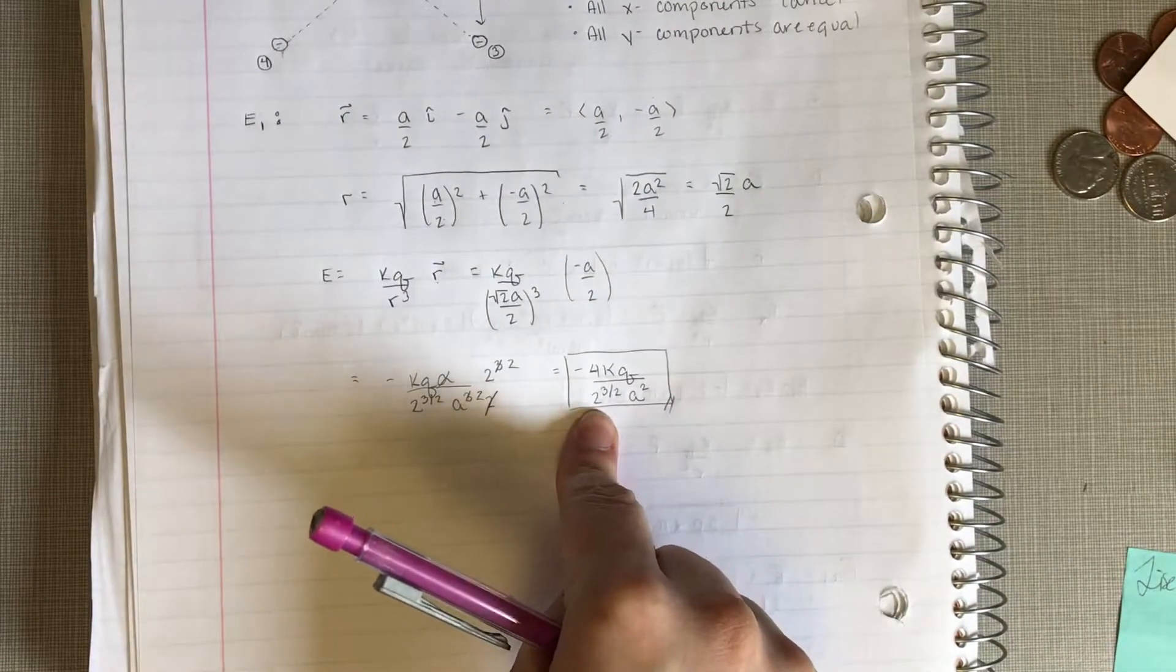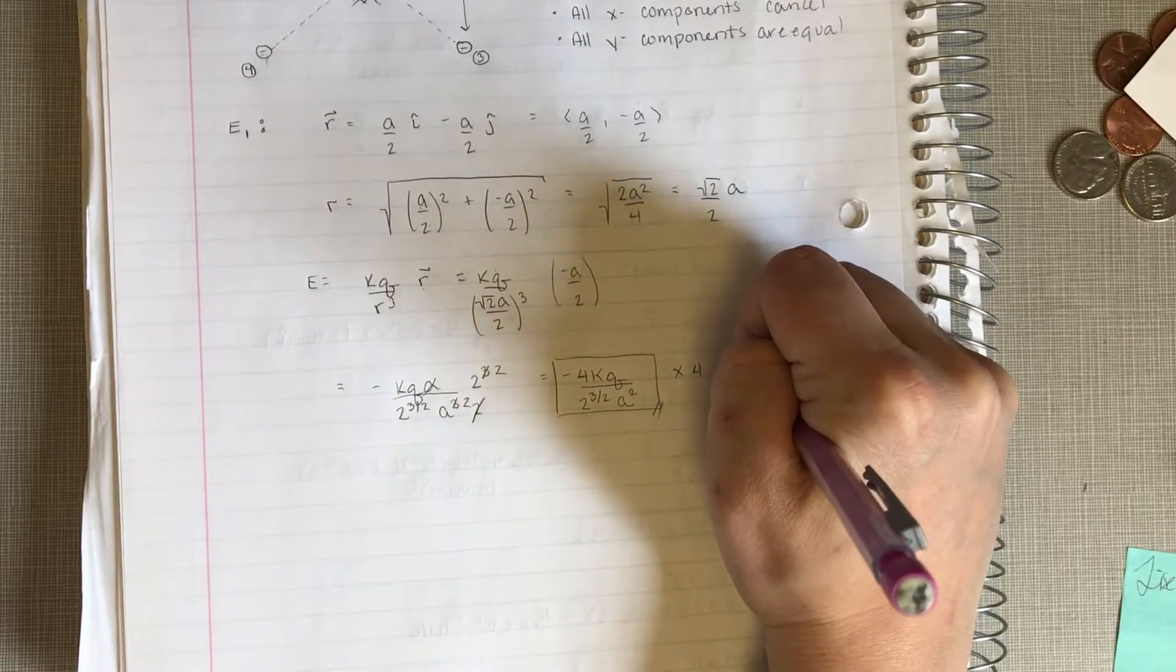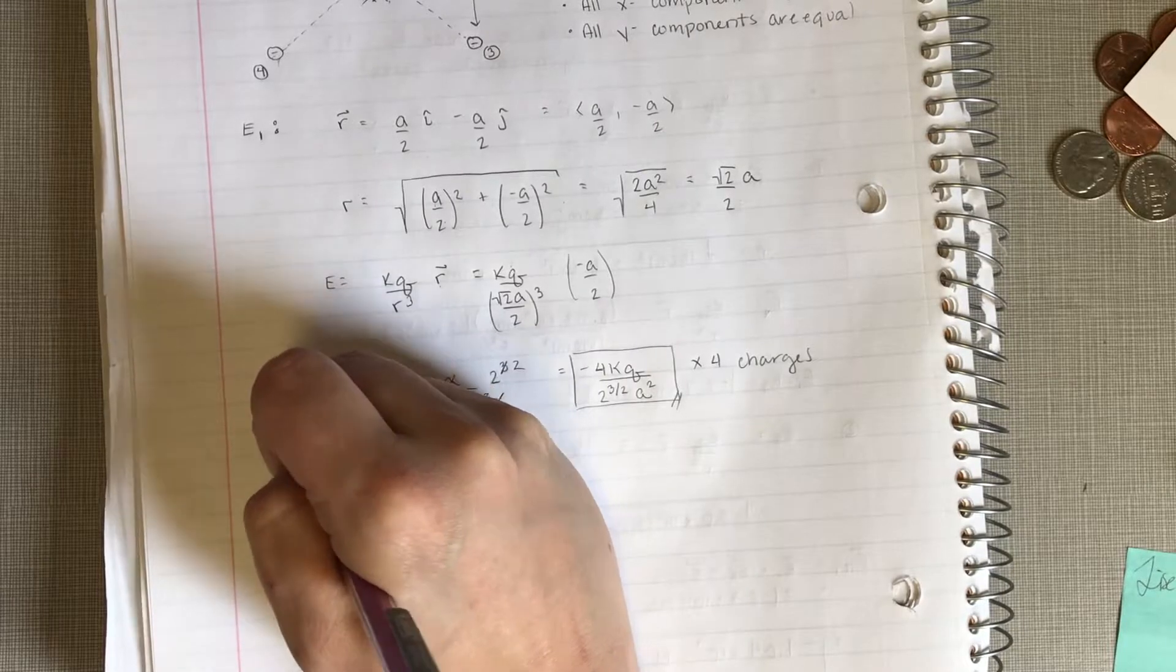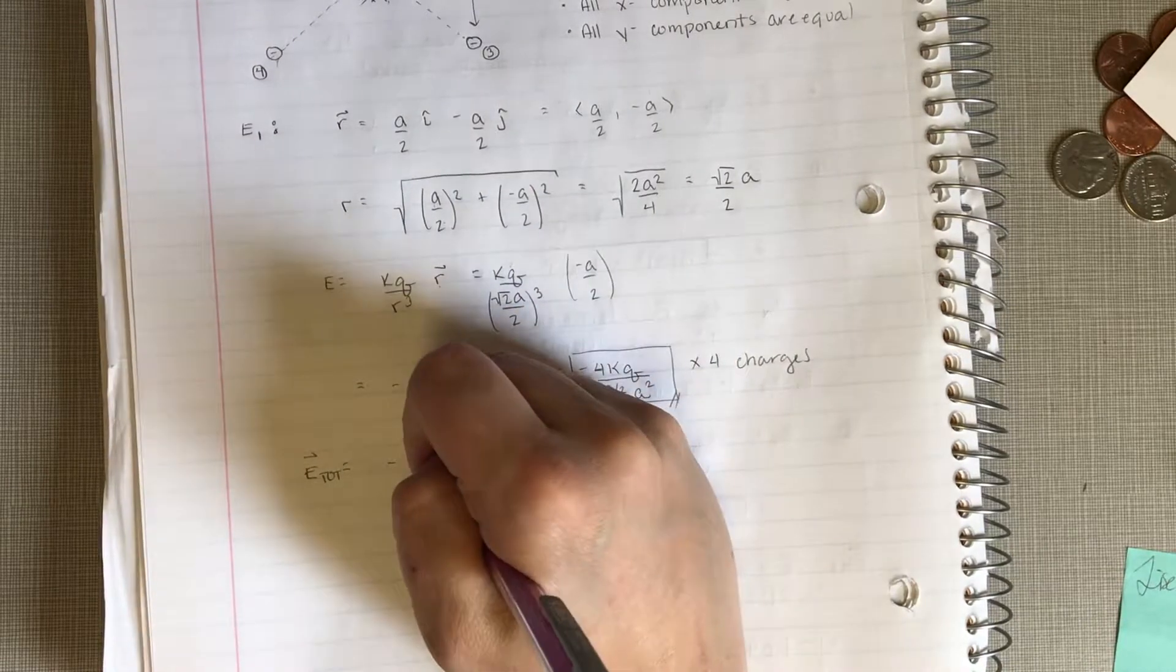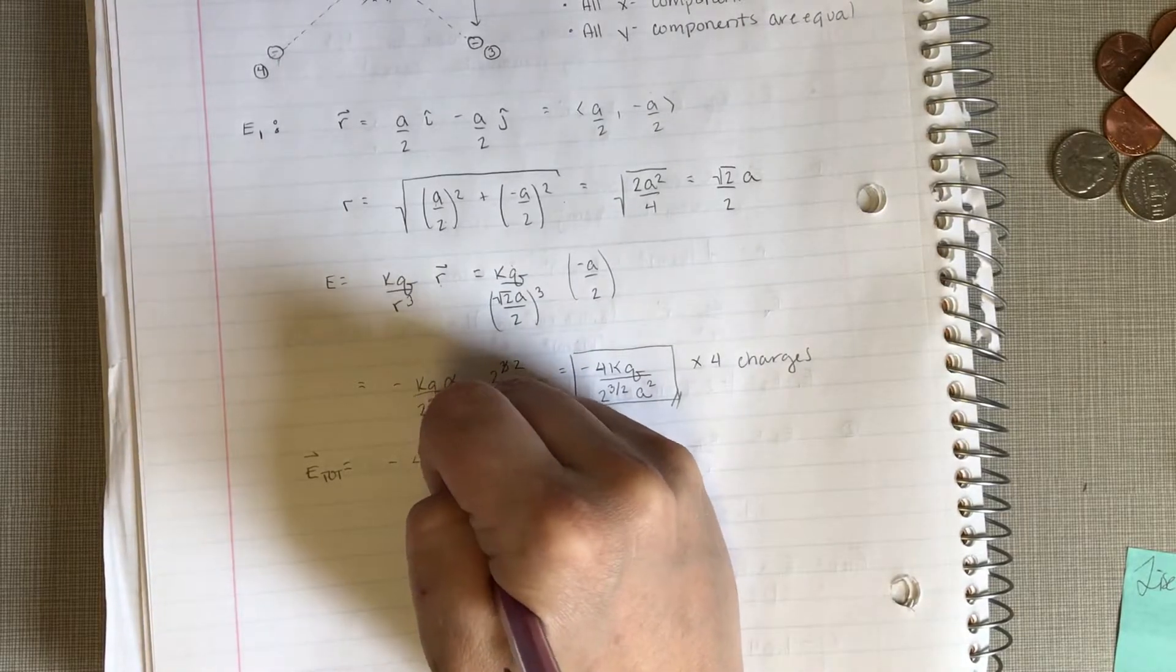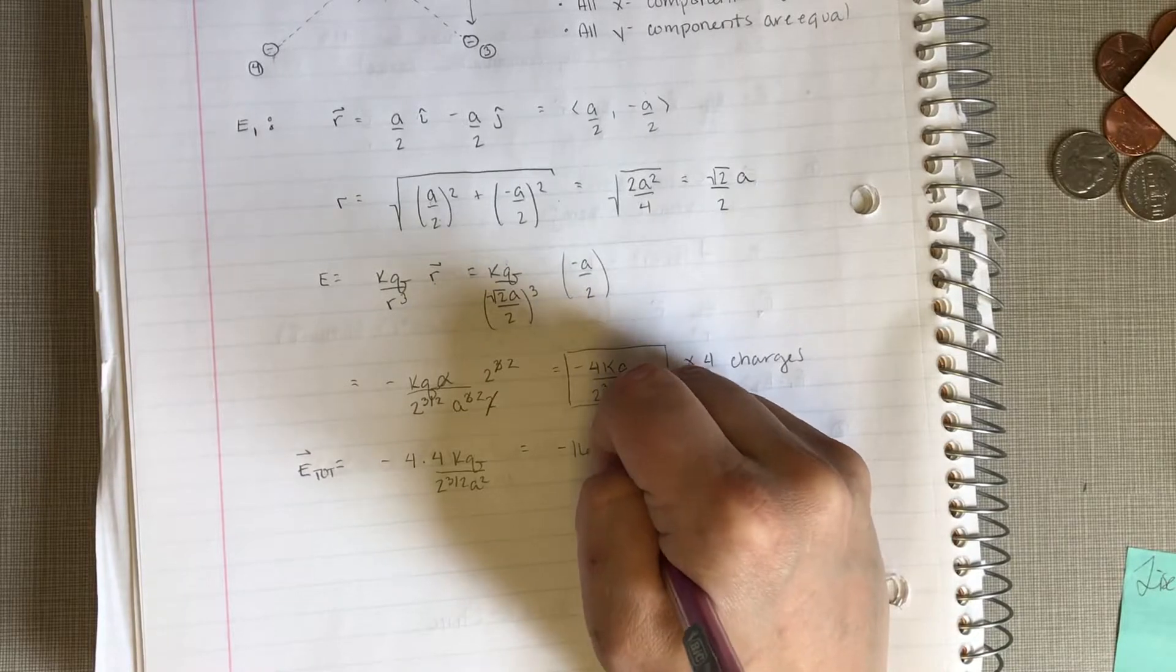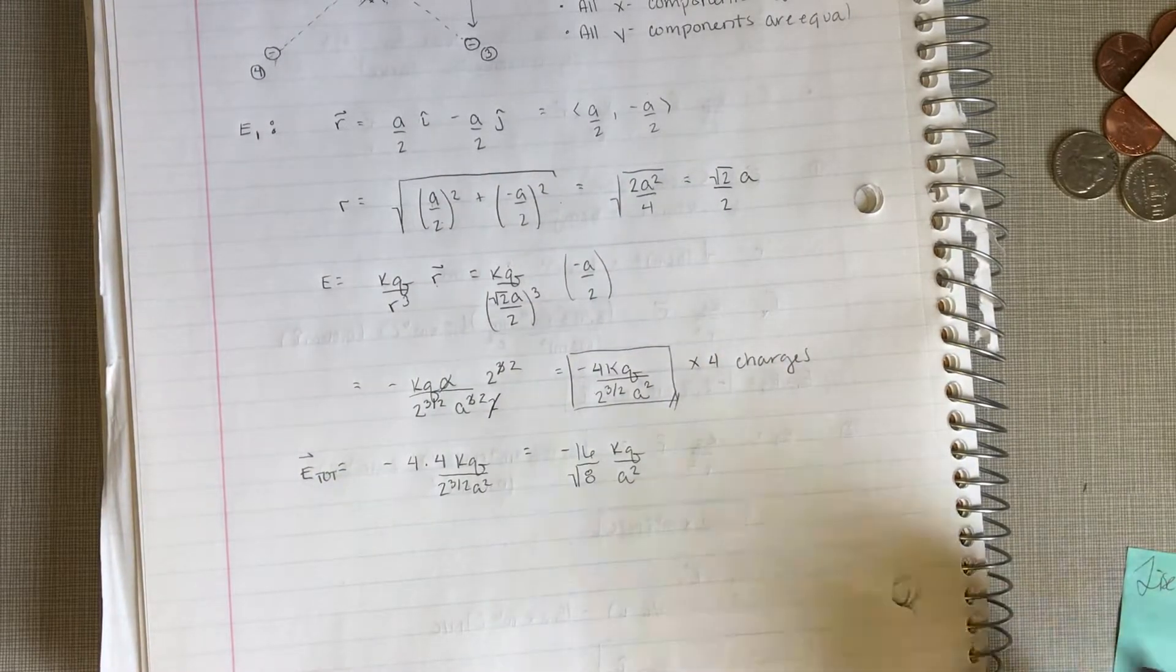Okay, but that's just for one of them. So, if I want all of it, then multiply by 4. Make sense? So, my total E field is going to be minus 4 times 4kq over 2 to the 3 halves a squared. Or minus 16kq over a squared. I'm going to say square root of 8 down here.